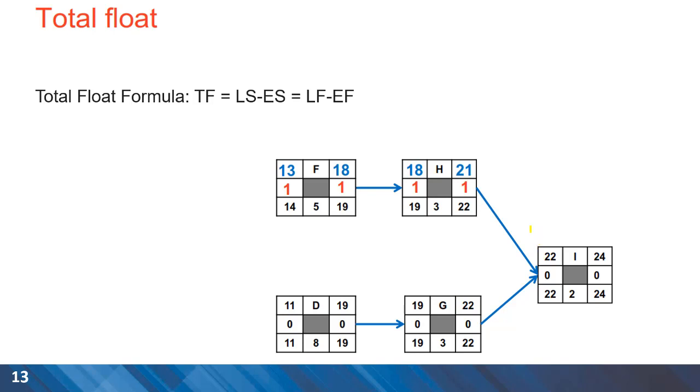Another example in here, and as you can see, some of the activities are on the critical path, so the total float is zero for them. And for other activities such as F and H, we have some float or slack.